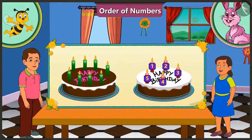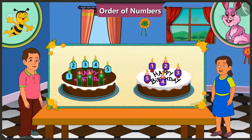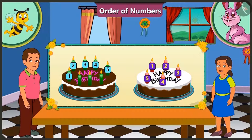And Bunty's candles: 1, 2, 3, 4, 5 candles. And we can see 3 more candles in Bunty's cake. That means the number of candles in Bubbly's cake is lesser than the number of candles in Bunty's cake.